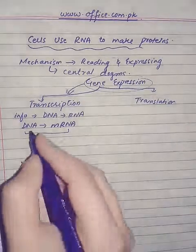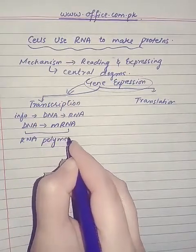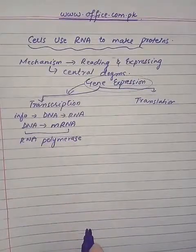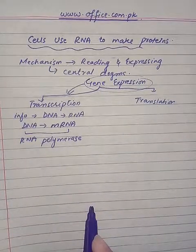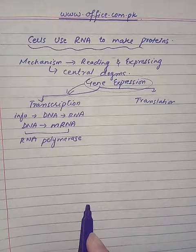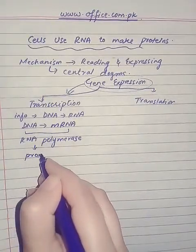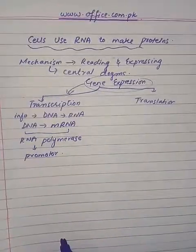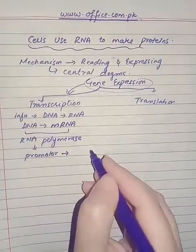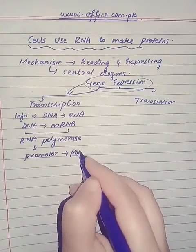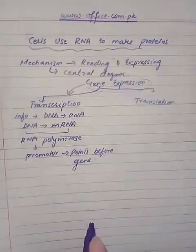Transcription starts when the enzyme RNA polymerase, which controls the whole process, binds to a particular site called the promoter. The promoter is the point before the gene — it is where RNA polymerase attaches to begin copying the gene.